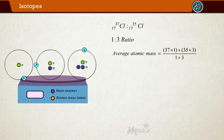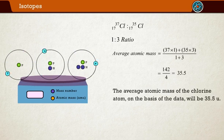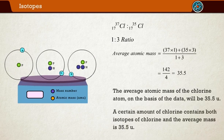For example, the average atomic mass of a chlorine atom, on the basis of the data, will be 35.5u. It means that if you take a certain amount of chlorine, it will contain both isotopes of chlorine, and the average mass is 35.5u.